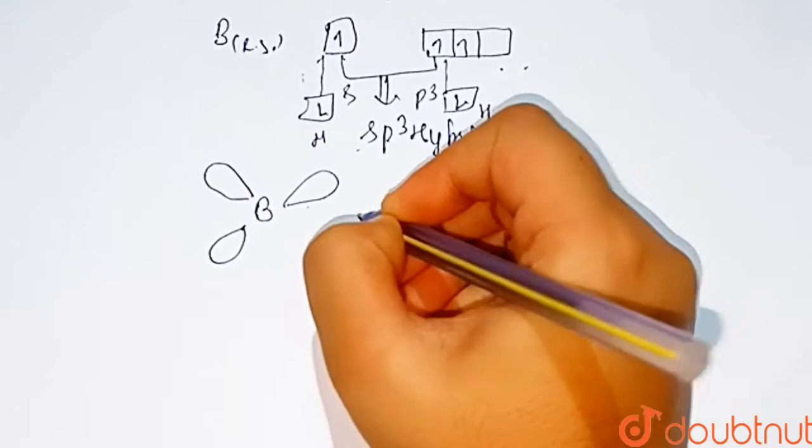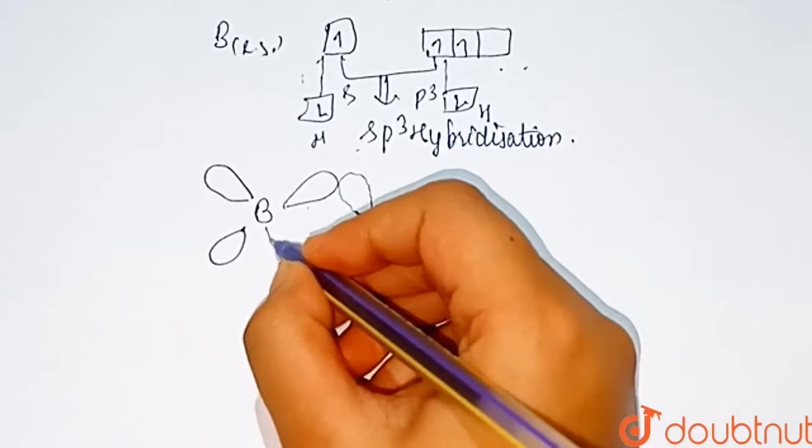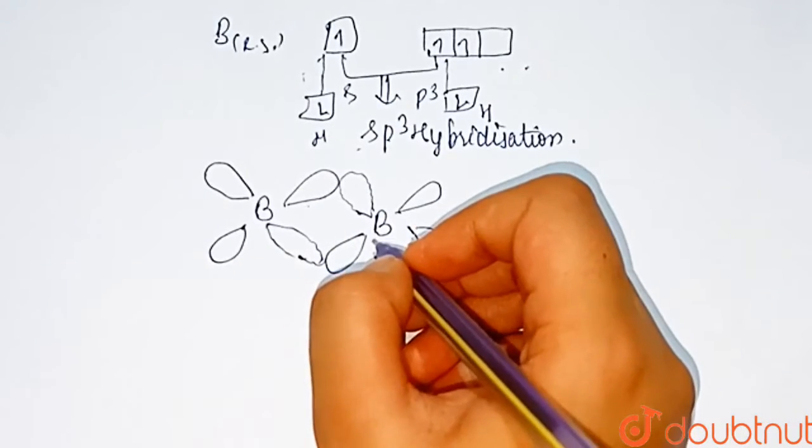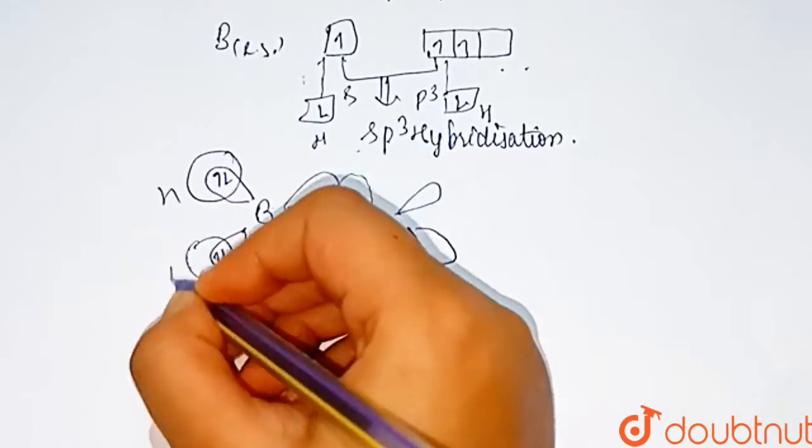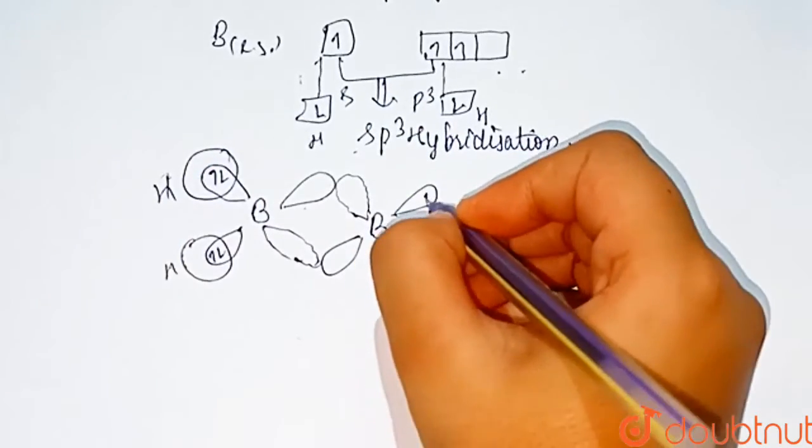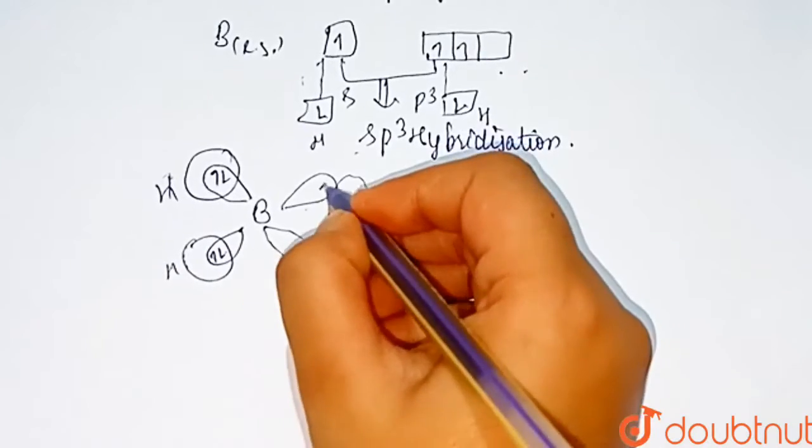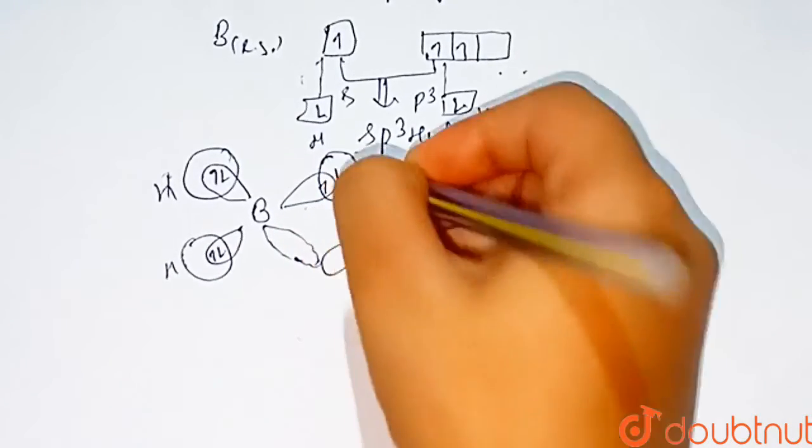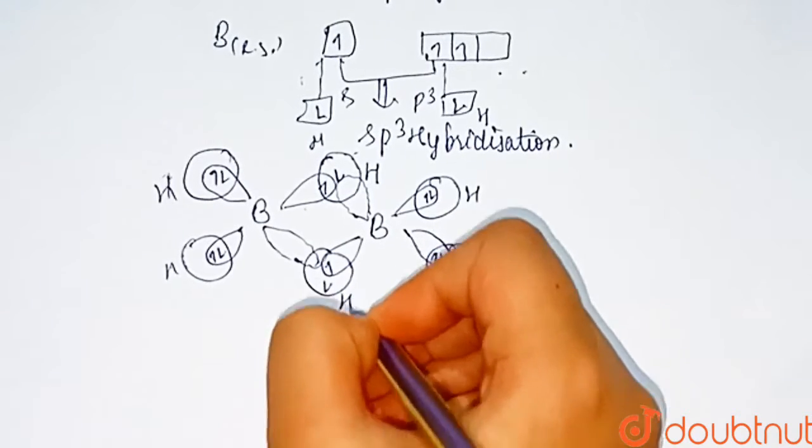I'll show this with dotted lines. When this overlaps with a hydrogen atom - this is also a hydrogen atom, this is also a hydrogen atom. One boron electron overlaps with this hydrogen, and this overlaps with this hydrogen.